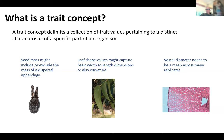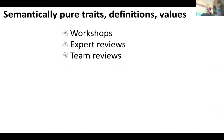For example, seed mass might include or exclude the mass of a dispersal appendage. Leaf shape might record basic width-to-length dimensions, or perhaps also curvature. When somebody talks about vessel diameter, are they referring to a single vessel or the average of a larger sample? We pursued semantically pure and explicit trait concepts across all 500 traits in three ways: we held workshops bringing together experts who used the same trait concept in diverse research agendas; we consulted experts to review other traits; and the Austrates team conducts pretty much continuous reviews of trait definitions.